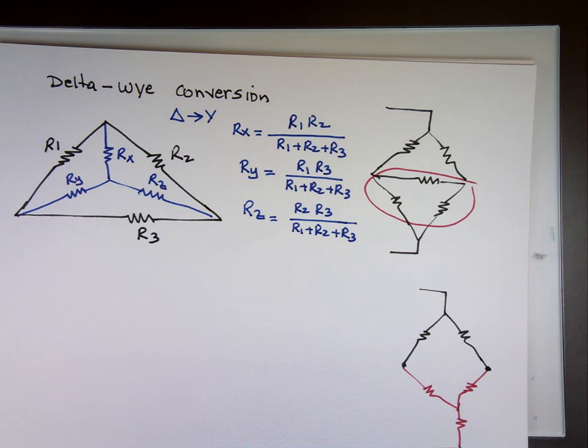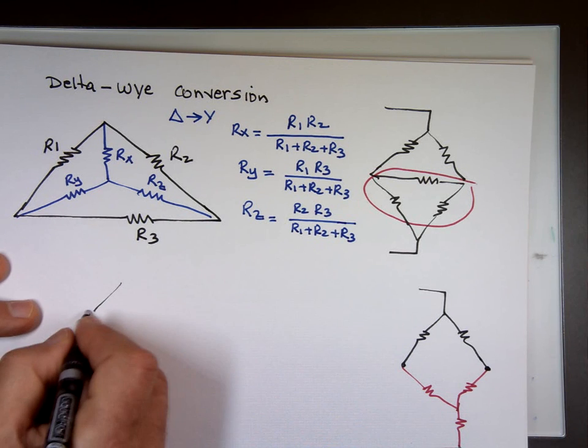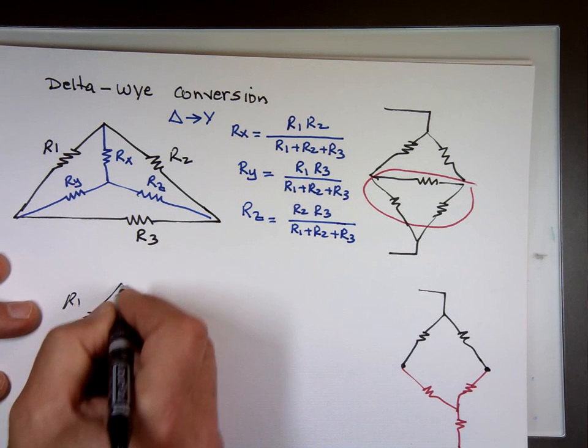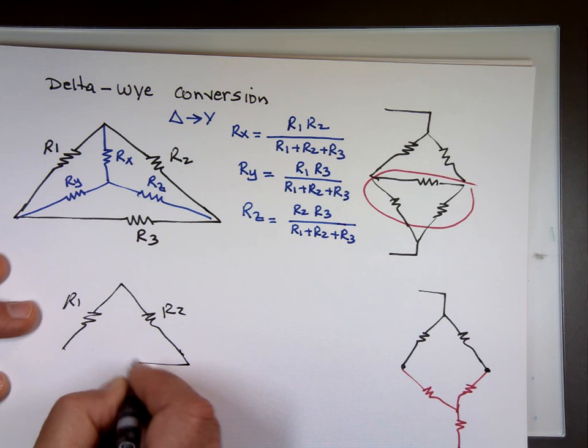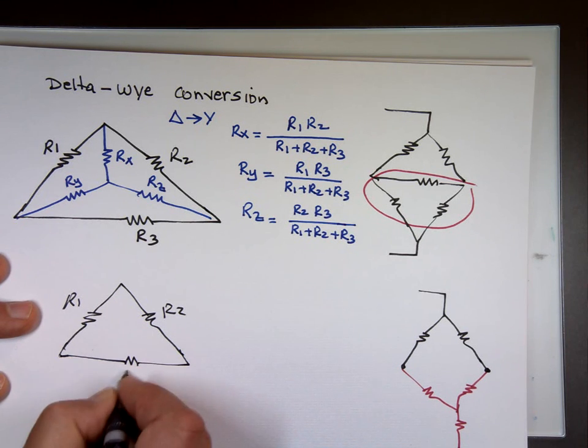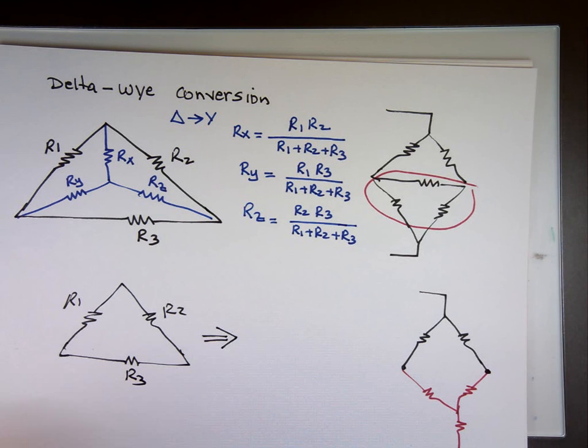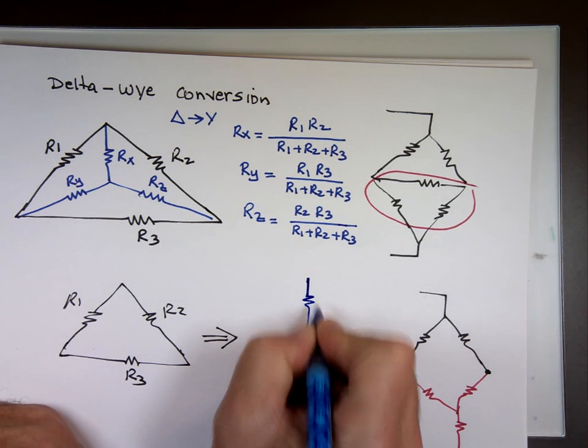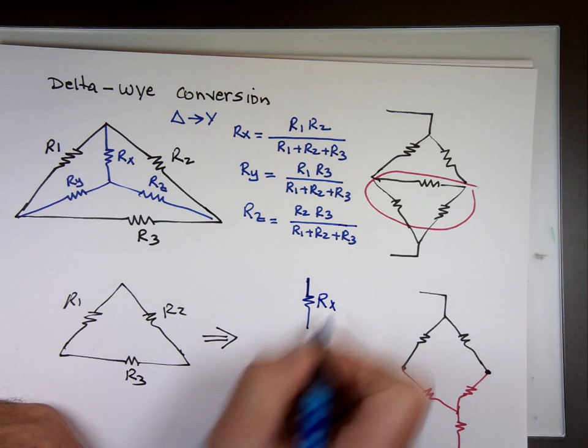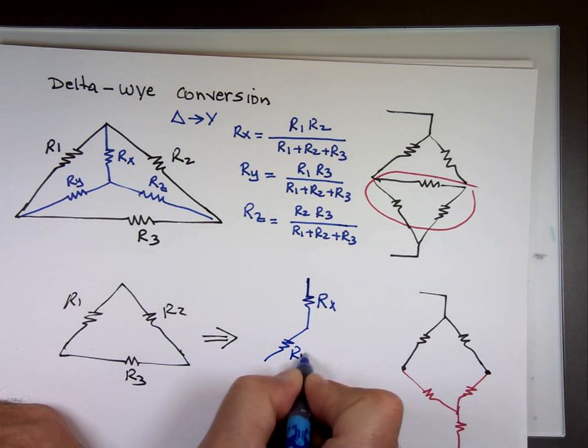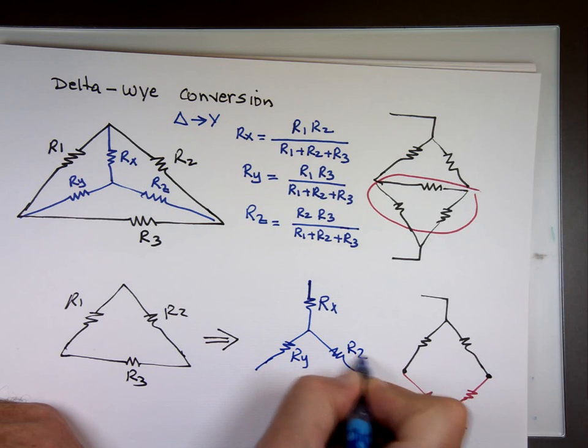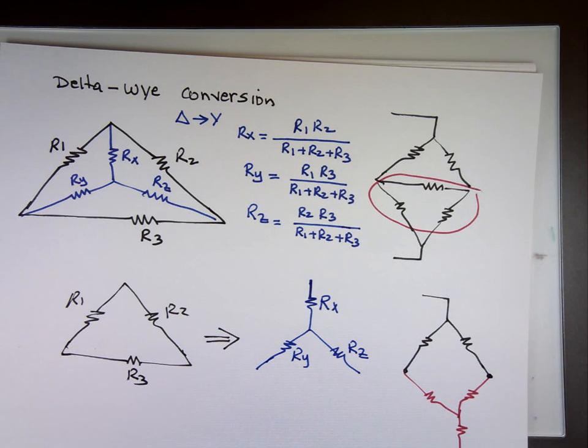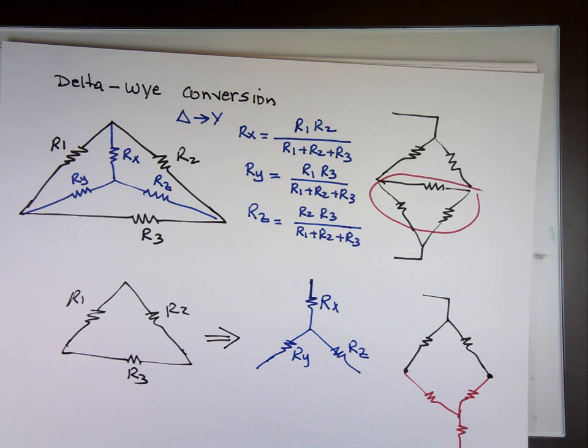So if you have a circuit that looks like this, we can change that to one that looks like this. R X, R Y, and R Z. We can replace this with that. We can also do the reverse.